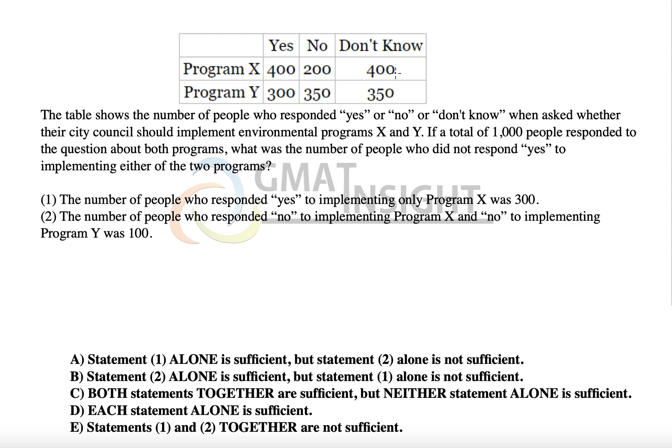If you add those, it's a thousand responses for X and similarly a thousand responses for program Y. The question is, what was the number of people who did not respond yes to implementing either of the two programs?